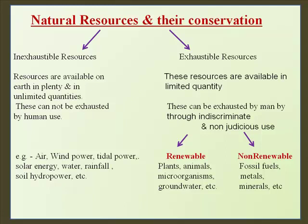Exhaustible resources are available in limited quantity. They can be exhausted by man through indiscriminate and non-judicious use. They are of two types: renewable resources such as plants, animals, microorganisms, and groundwater; and non-renewable resources such as fossil fuels, metals, and minerals.